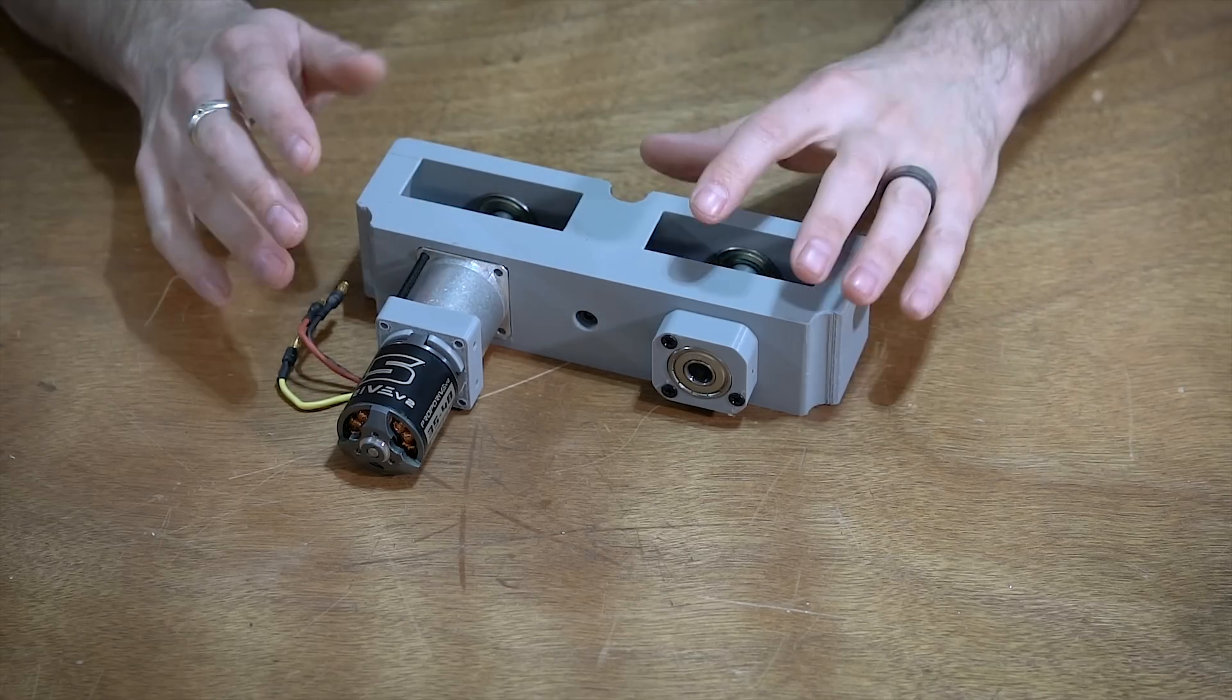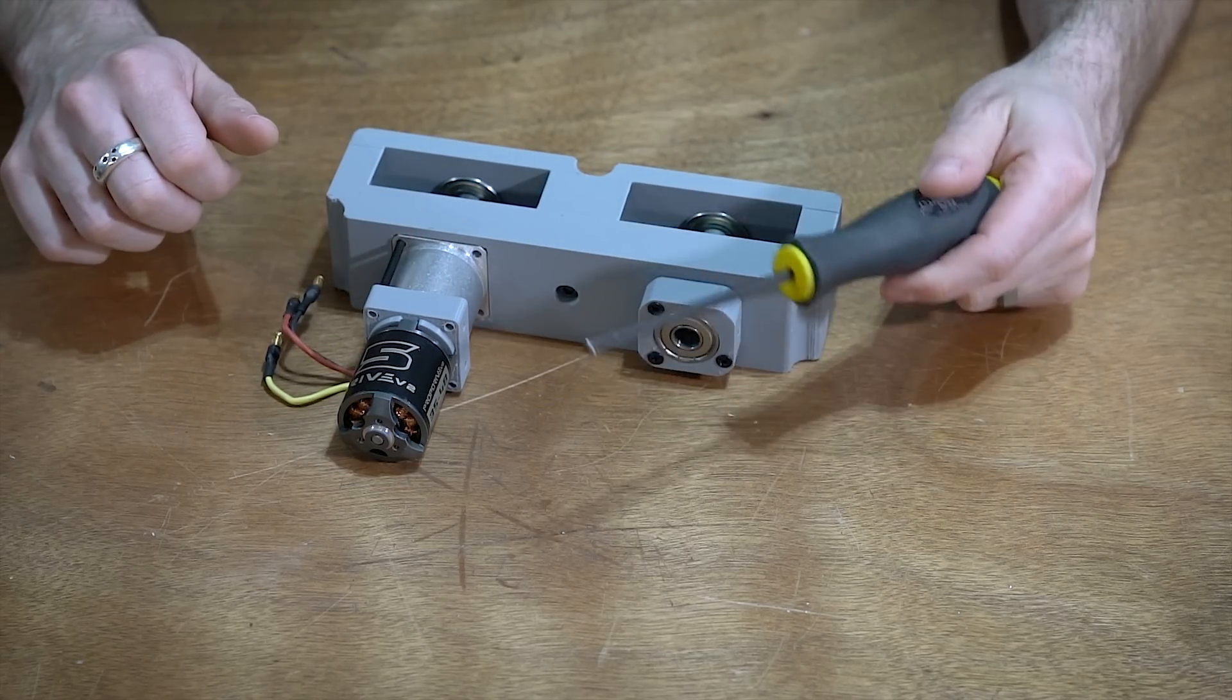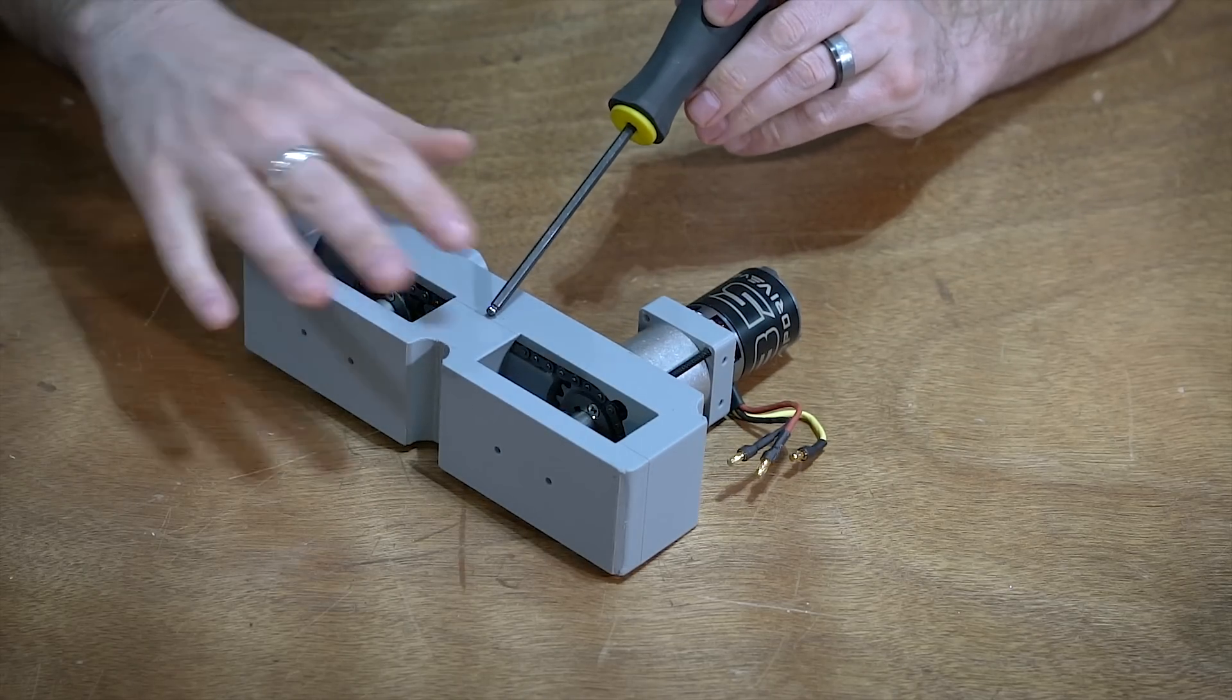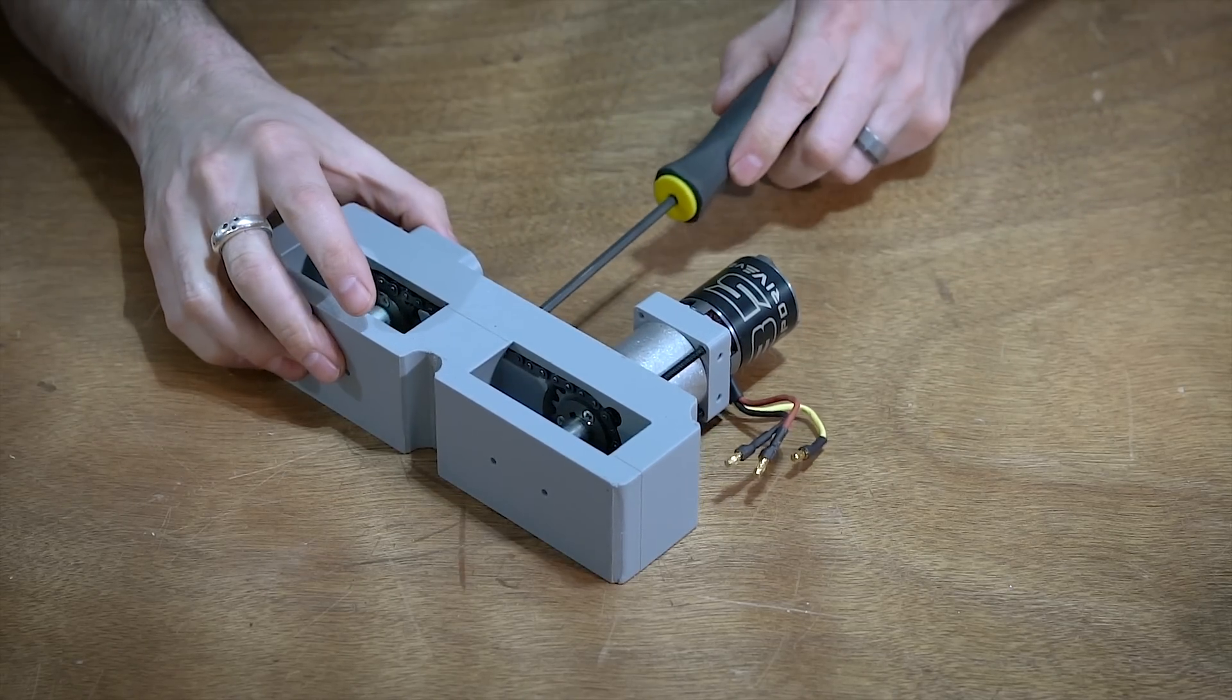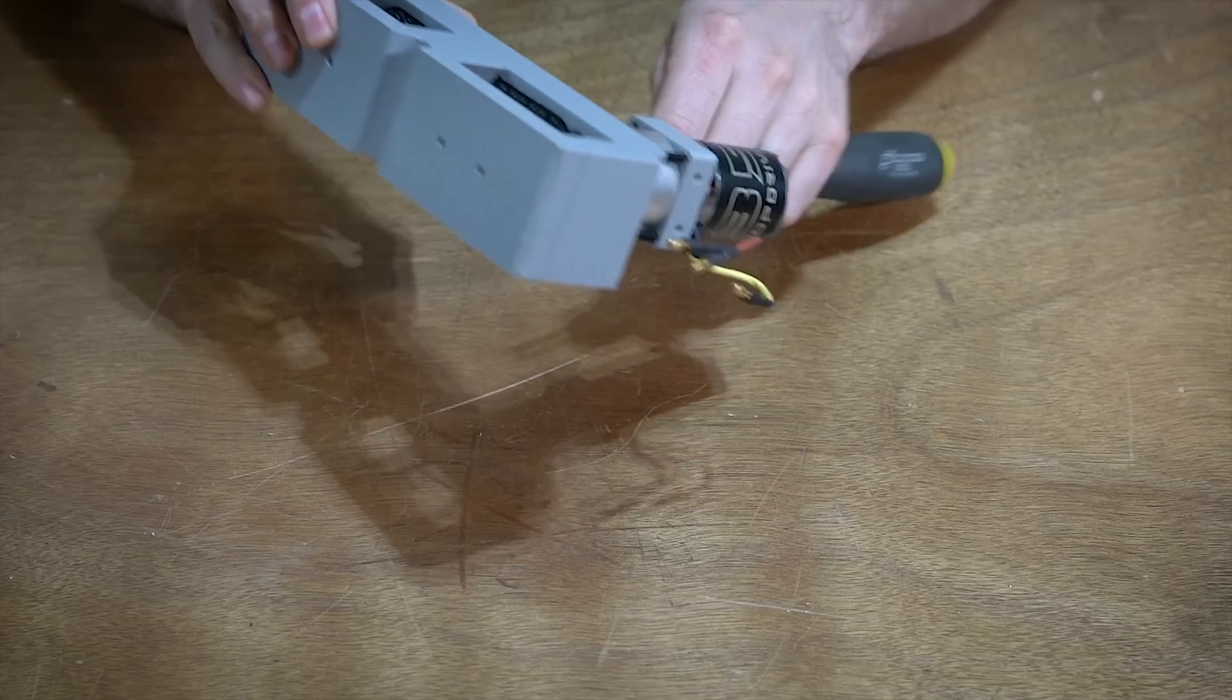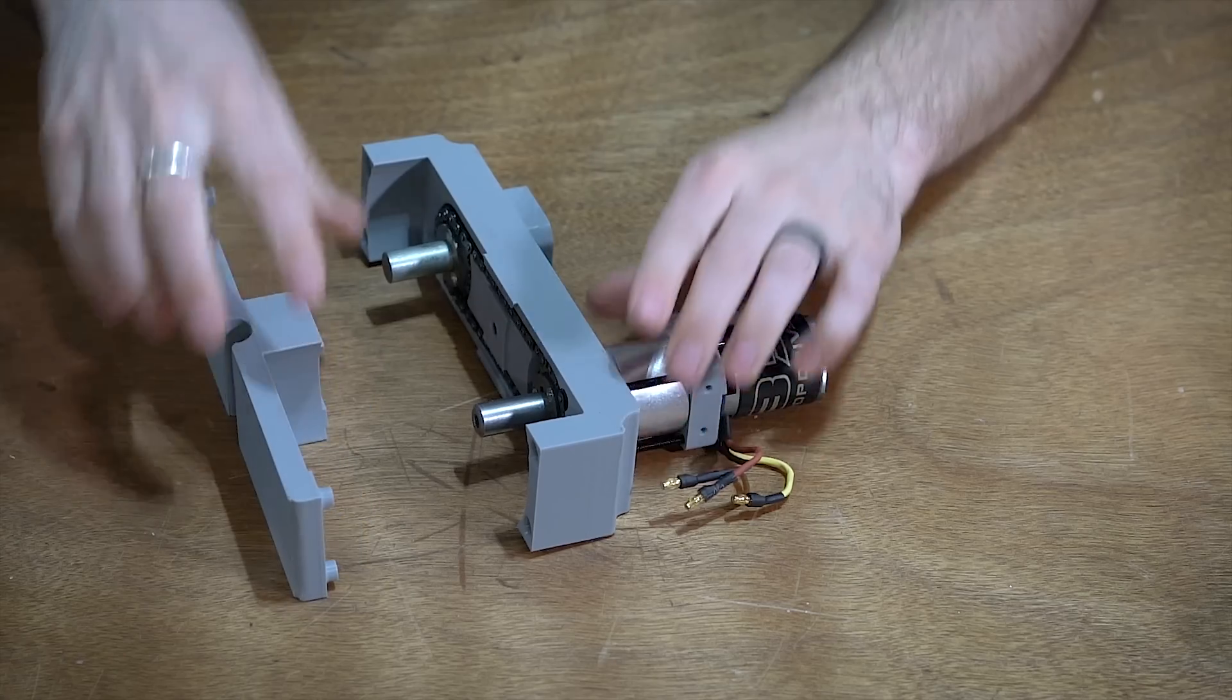And if I can share fasteners or at least share the same Allen size, that is awesome. So for this, there is only one screw that holds this whole assembly together. I mean, kind of generally. So we take out this one screw in the back and then this whole thing should come apart.